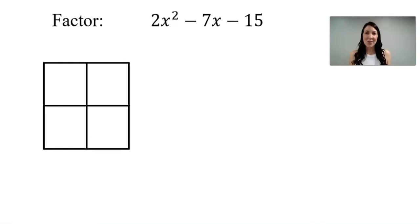In this video, I'm going to be showing you how to factor using the box method. To begin, we're going to multiply the first coefficient times the last number. I will refer to those as a and c. So multiplying a and c gives us negative 30.